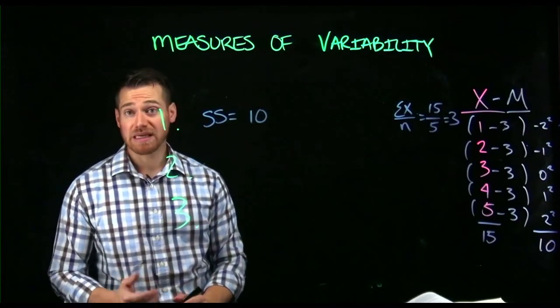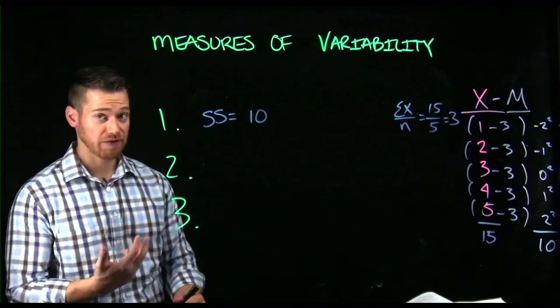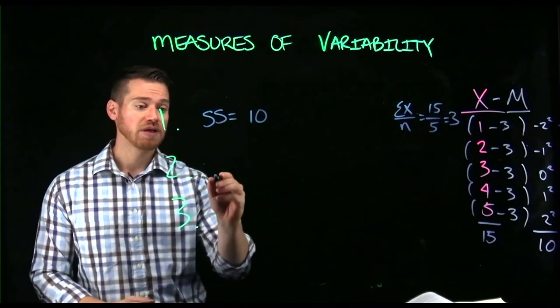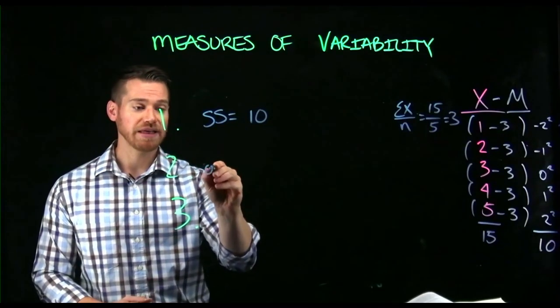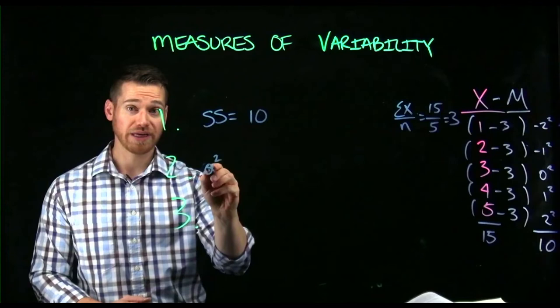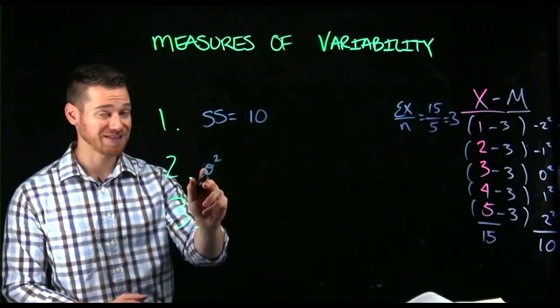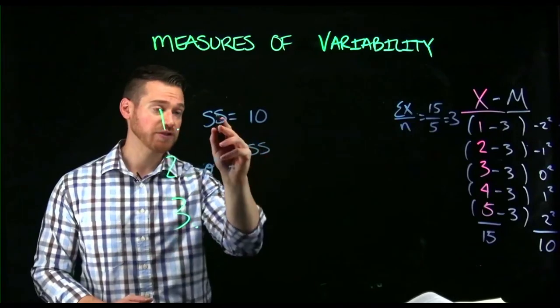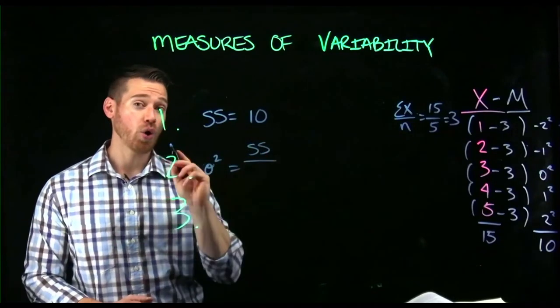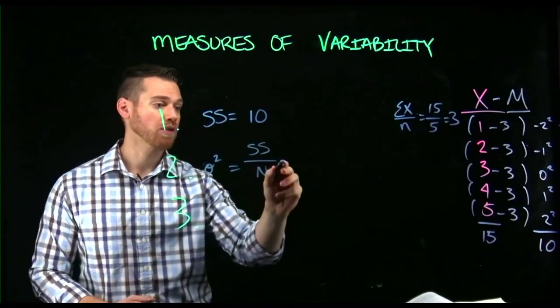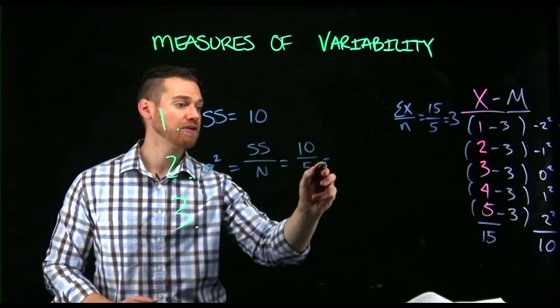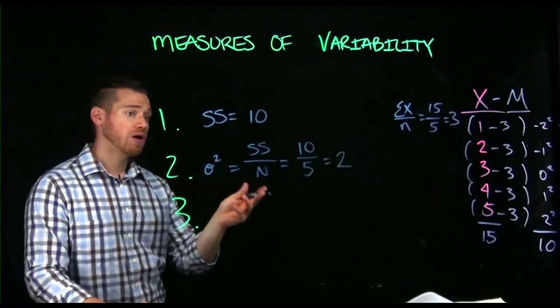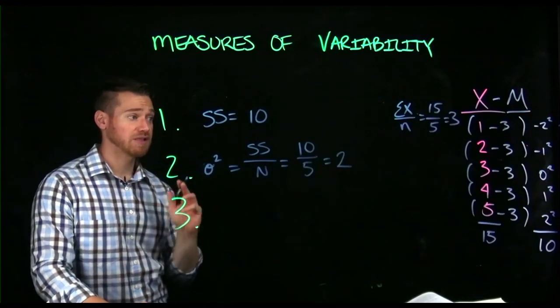So now the next step would be, well, how do we calculate from this, the variance? Well, if it's a population, population variance will annotate with the sigma, this is a lowercase sigma, not a capital sigma, but that's still sigma, sigma squared. And sigma squared is going to be that sum of squares value, right? Over N, which here is 10 over five. It's two. So our population variance here is two.